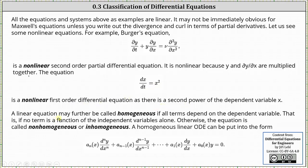A linear equation may further be called homogeneous if all terms depend on the dependent variable — that is, if no term is a function of the independent variables alone. Otherwise the equation is called non-homogeneous, or inhomogeneous. A homogeneous linear ODE can be written in the form shown below, where no term is a function of the independent variable alone.